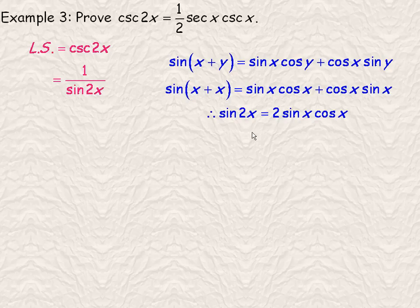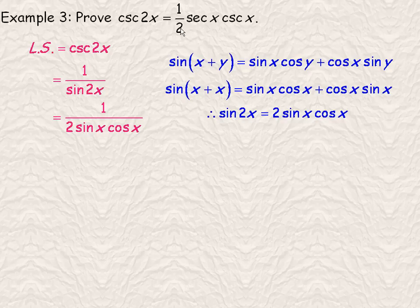So in place of the sin 2x, I'm going to substitute 2 sin x cos x. Now, there's where the half came from. There's the 1 over 2.